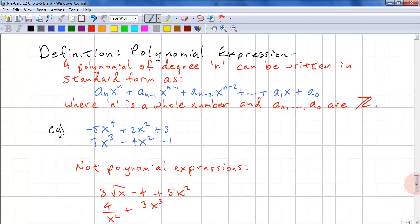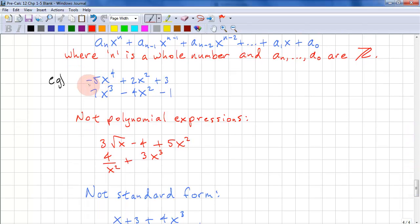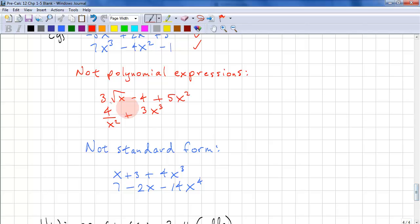So let's look at some examples. -5x^4 + 2x^2 + 3. That is a polynomial expression. Again, this one is a polynomial expression. These are not polynomial expressions.